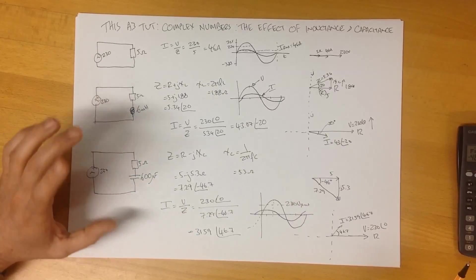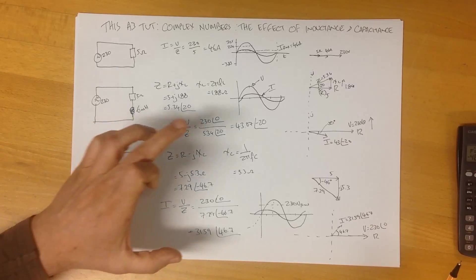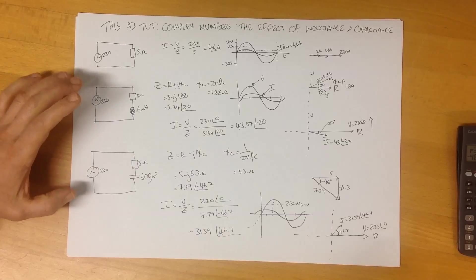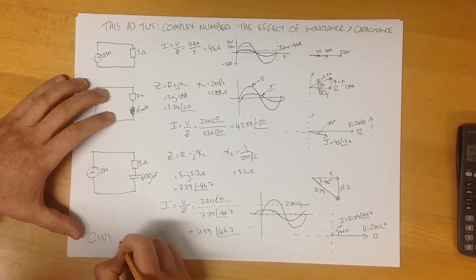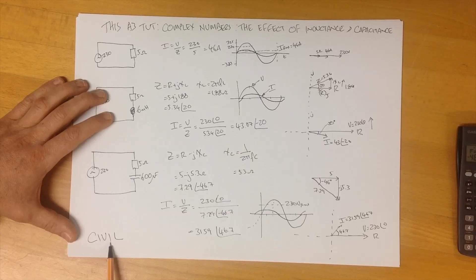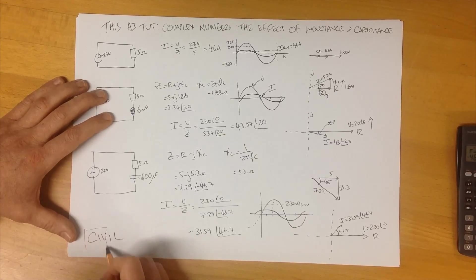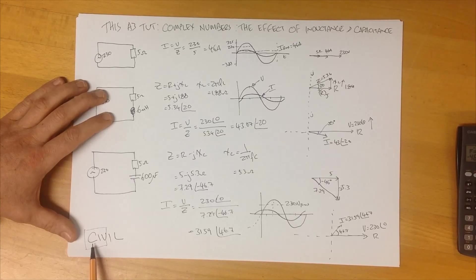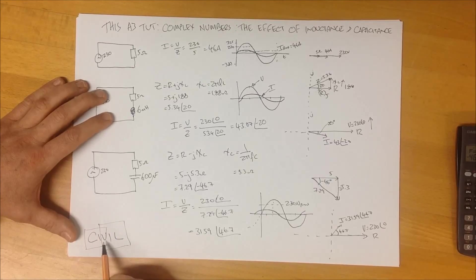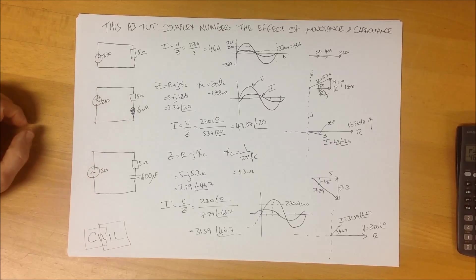Now, some students seem to get a little bit confused with leading and lagging, and the easiest way to remember that is simply with the word civil. In a capacitive circuit, the current leads the voltage. The voltage leads the current in an inductive circuit. Capacitive circuit, current leads voltage. Inductive circuit, voltage leads current. That's a nice, easy thing to remember. Thanks for listening.